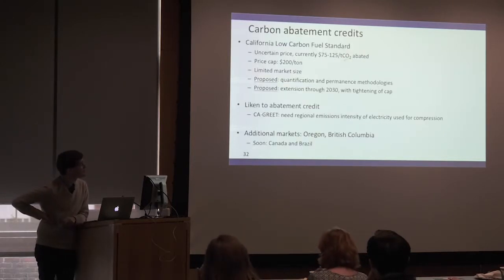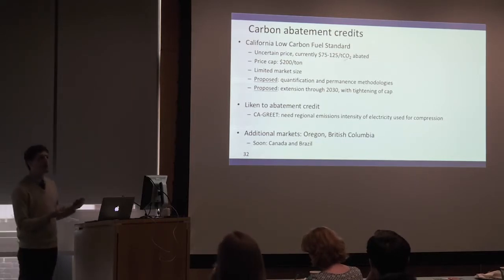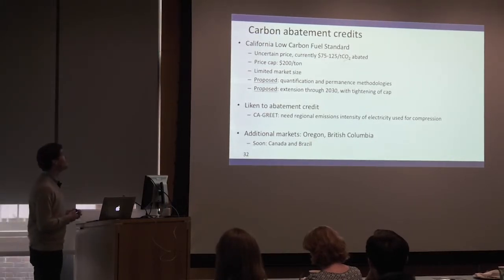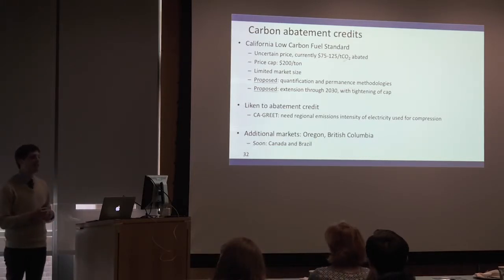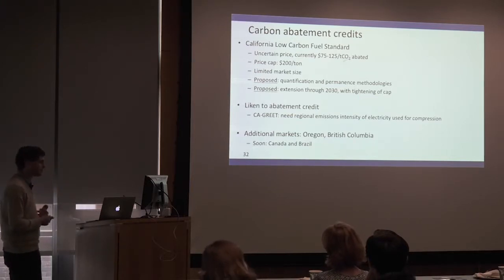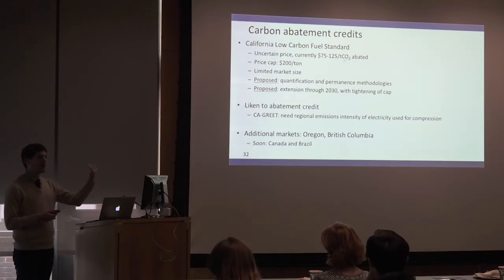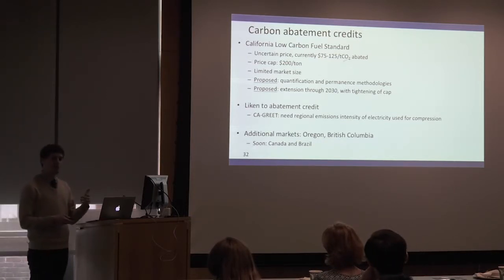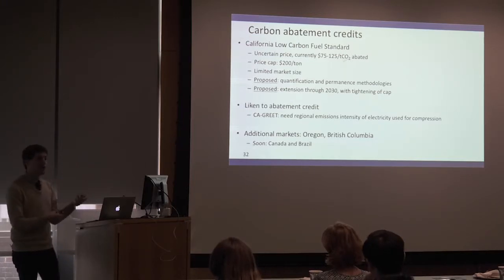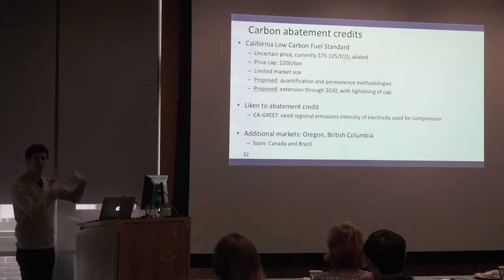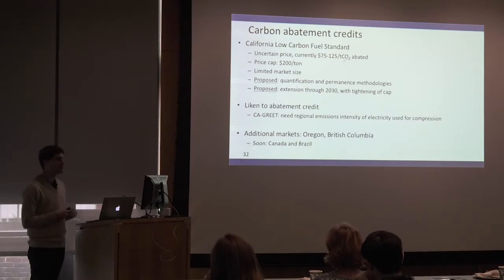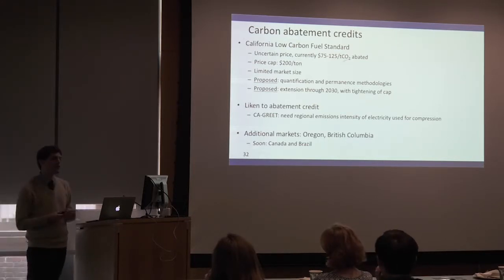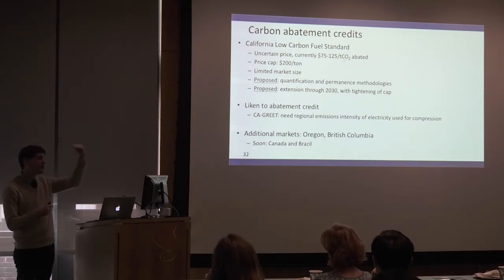The second important policy is more of a life cycle policy — carbon abatement credits. This doesn't pay per ton of CO2 stored, but per ton of CO2 abated. The shining example is the California Low Carbon Fuel Standard, a transportation fuel policy that decreases the carbon intensity over time of a pool of transportation fuels. Fuel producers making particularly dirty fuels pay more; those making clean fuels sold in California can capture a subsidy from tradable permits called LCFS credits. For the past several years, the price has hovered between $75 and $125 per ton of CO2 abated, with a current price cap of about $200 a ton.